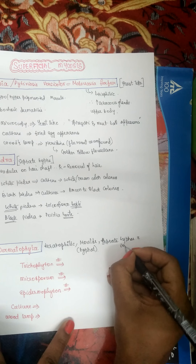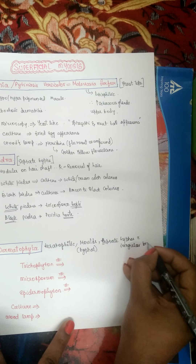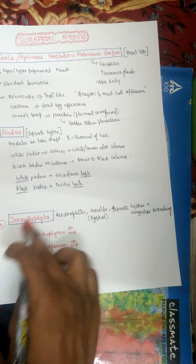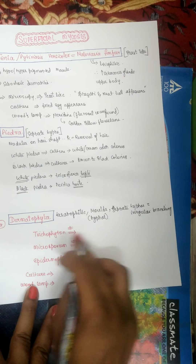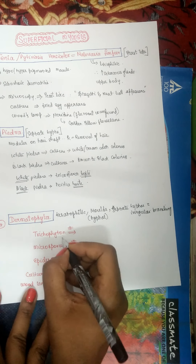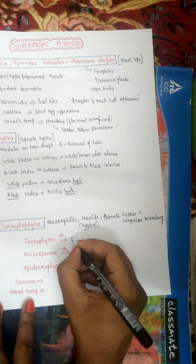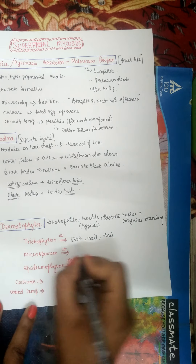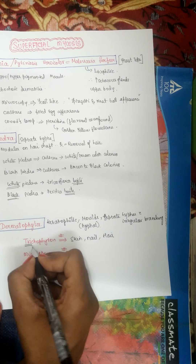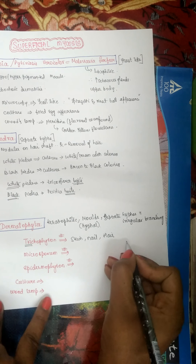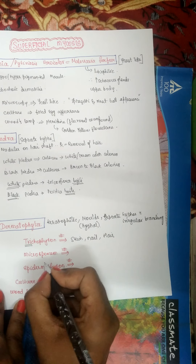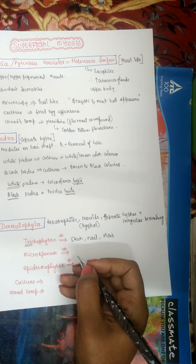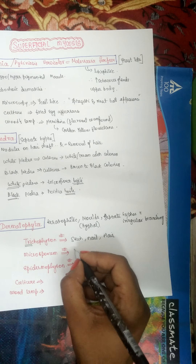The three main genera of dermatophytes are Trichophyton, Microsporum, and Epidermophyton. Dermatophytes cause lesions on skin, nail, and hair. Trichophyton — remember 'tri' meaning three — affects all three: skin, nail, and hair. Microsporum — think 'micro' near your head, so it affects skin and hair.